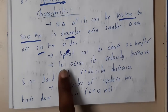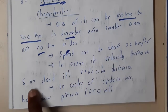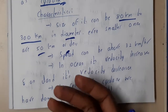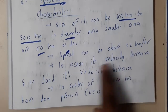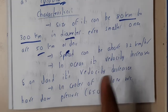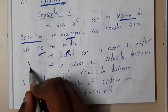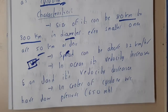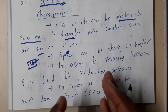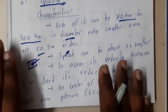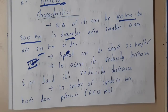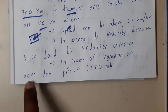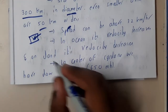The speed can be about 32 kilometers per hour. In the ocean its velocity increases and on land its velocity decreases, because it is a cyclone which occurs on water. On water the water molecules can move easily, so the speed is higher, whereas land is solid so the speed is reduced.